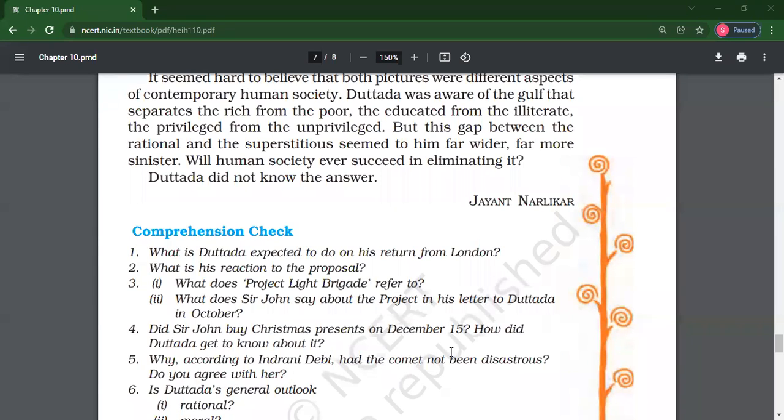Why, according to Indrani Devi, had the comet not been disastrous? Do you agree with her? Bani Singh, she thought that it was destroyed by the Yajna that was performed by his grandson. No, we... No, I do not agree. Give reasons, Bani. Why don't you agree?